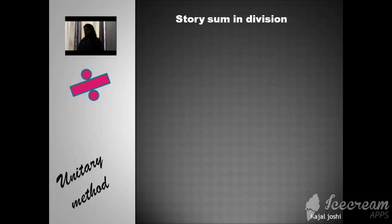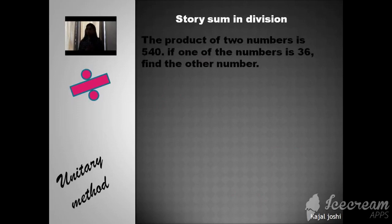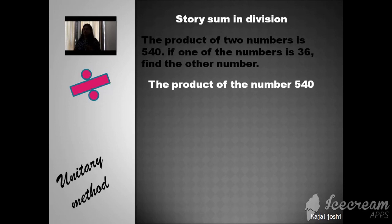Now, one story sum here. The product of two numbers is 540. One of the numbers is 36. So find here the other number. So here you have done two number multiplication. This one number you have given is 36. So here we find the other number. So write the first statement. The product of two numbers is 540. One of the numbers is 36.